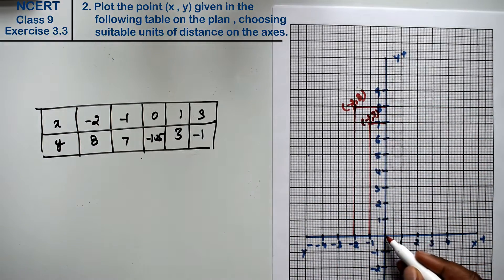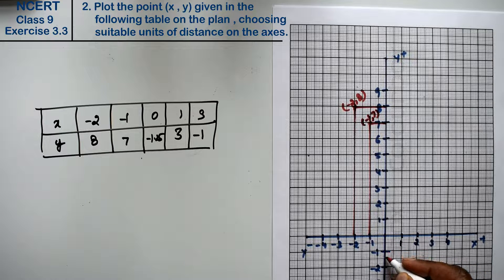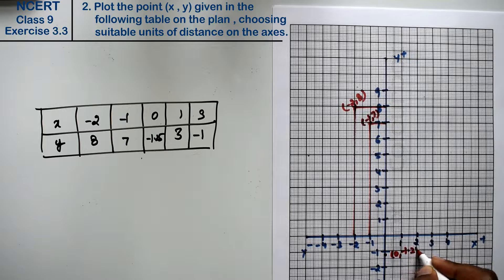Next, x 0 and y minus 1.25, friends. This is 2 blocks half, right friends. So here I will approximately mark it. This is 0 and minus 1.25, right.